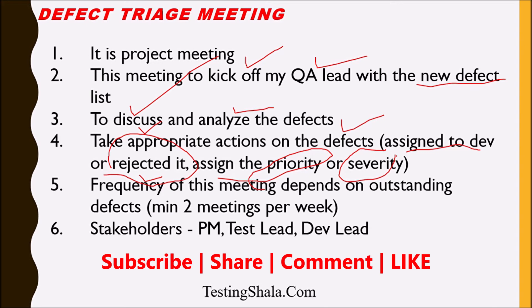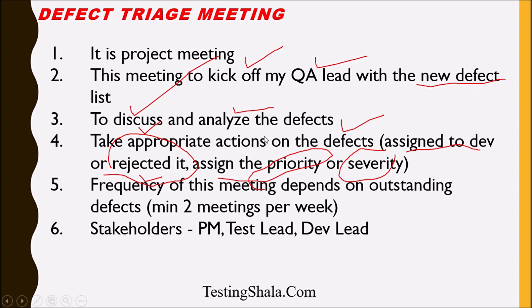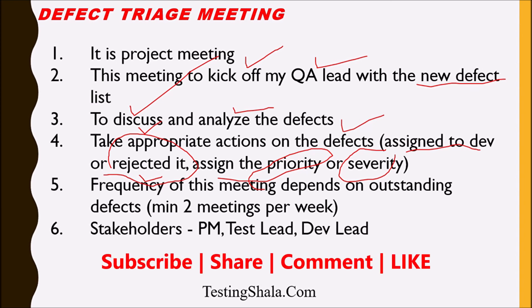The QA lead sends the new defect list to all relevant stakeholders. During the meeting, each defect is discussed and analyzed, and appropriate actions are taken for every defect. The frequency of this meeting is kept to the minimum required, and the main stakeholders are the project manager, test lead, and dev lead.